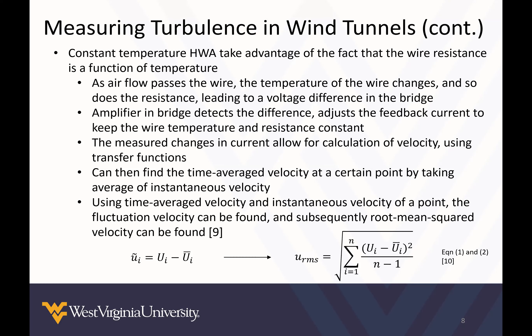The measured changes in current flow allow for calculation of velocity using transfer functions. We can find the time-average velocity at the point where the hot wire anemometer is located by taking the average of the instantaneous velocity. Using the time-average velocity and instantaneous velocity at that point, the fluctuation velocity can be found, and subsequently the root mean squared velocity. The equations for fluctuation velocity and root mean square velocity are shown here.